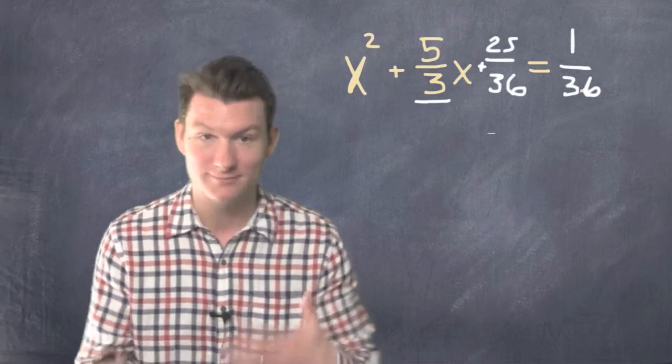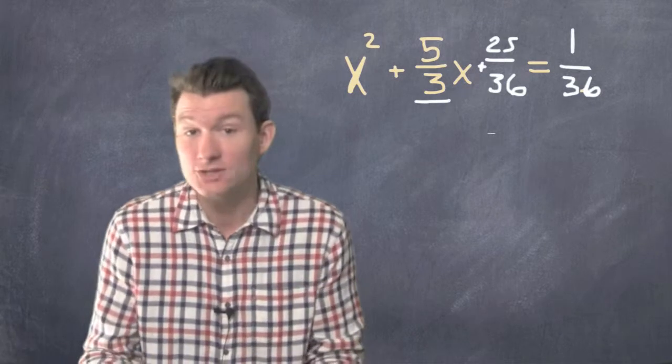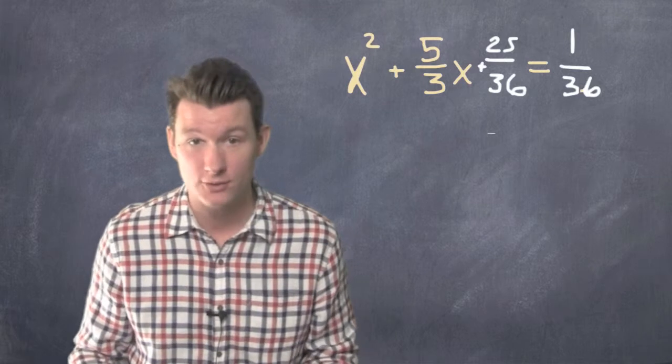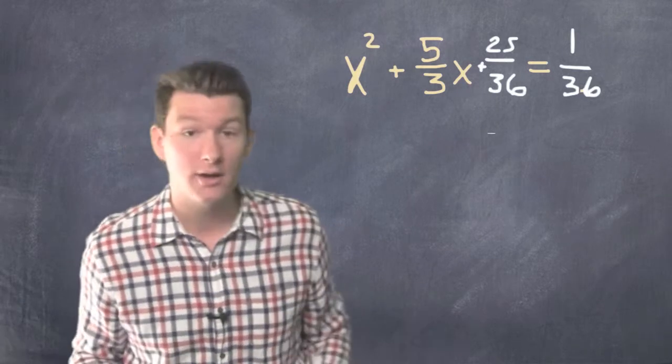Alright, we got a little messy with the fractions there, but that's the third step of completing the square. You've got x squared plus 5 over 3x plus 25 over 36 equals 1 over 36.